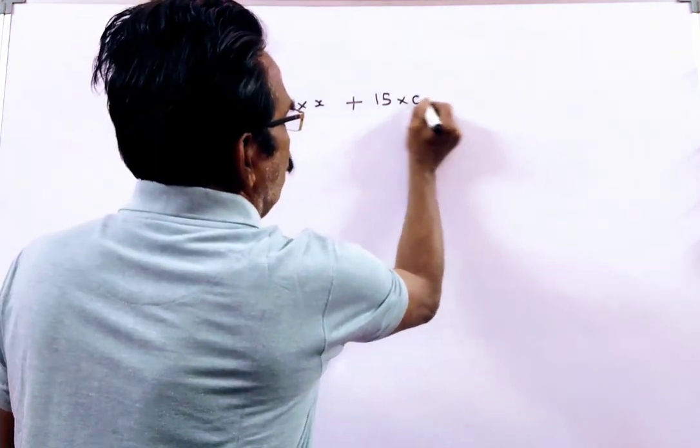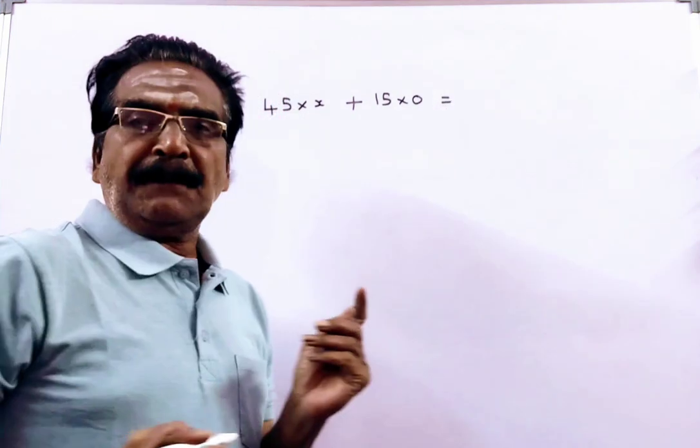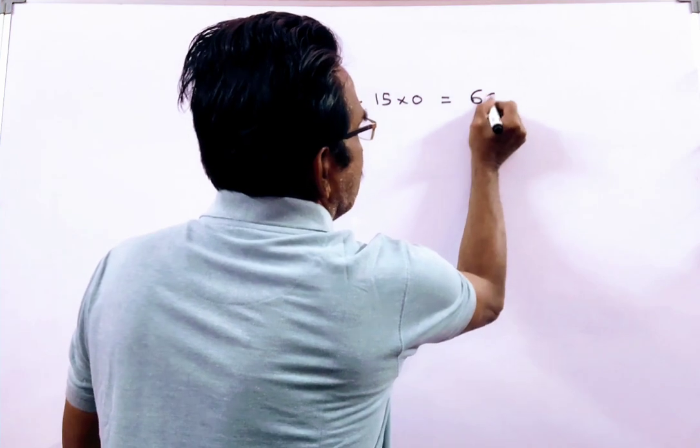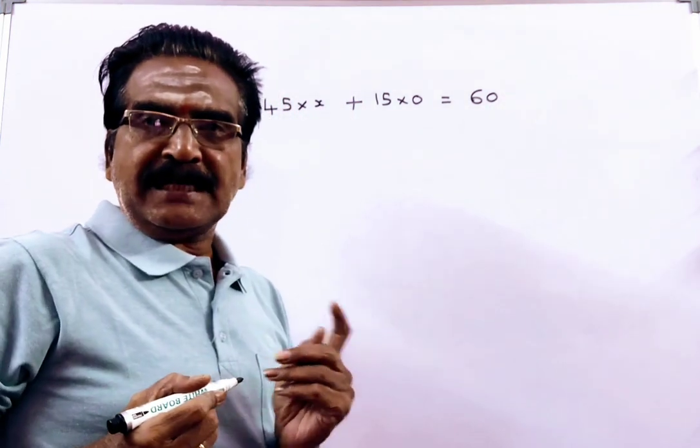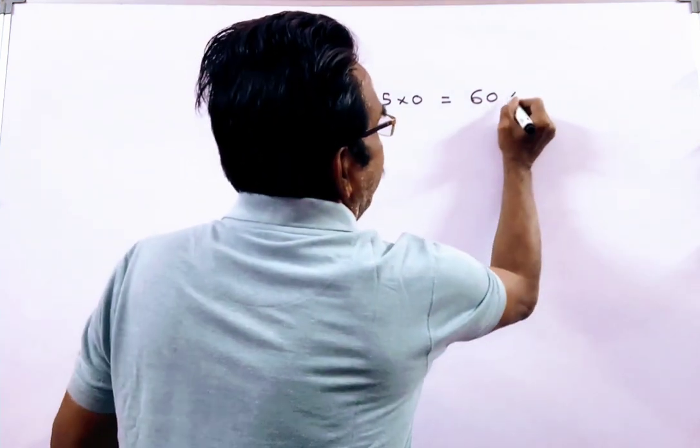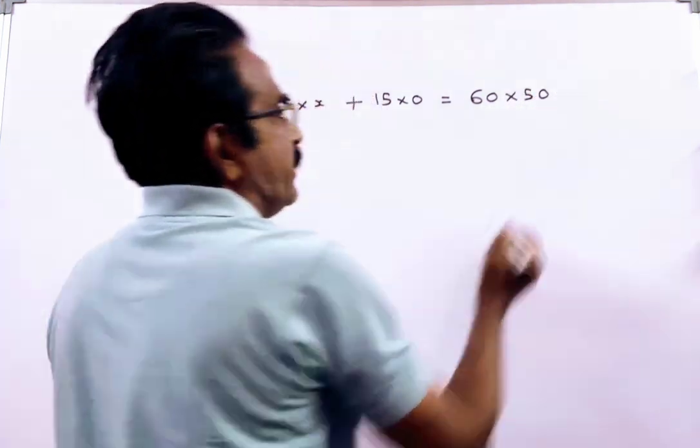So 15 into 0, and now the price of the mixture, 45 plus 15, 60 liters, and the price of the mixture after adding water is 50. So this is your equation.